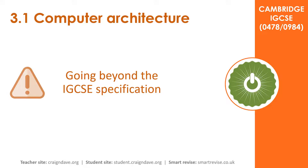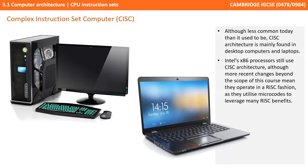Broadly speaking, when you study this at a high level, we talk about instruction sets belonging to one of two large categories: either CISC or RISC. Although much less common today than it used to be, the CISC architecture is mainly found in desktop computers and laptops. Intel's x86 processors still use the CISC architecture, although more recent changes mean they operate very much like a RISC fashion, utilizing micro code which allows them to leverage many of the benefits of the RISC architecture.